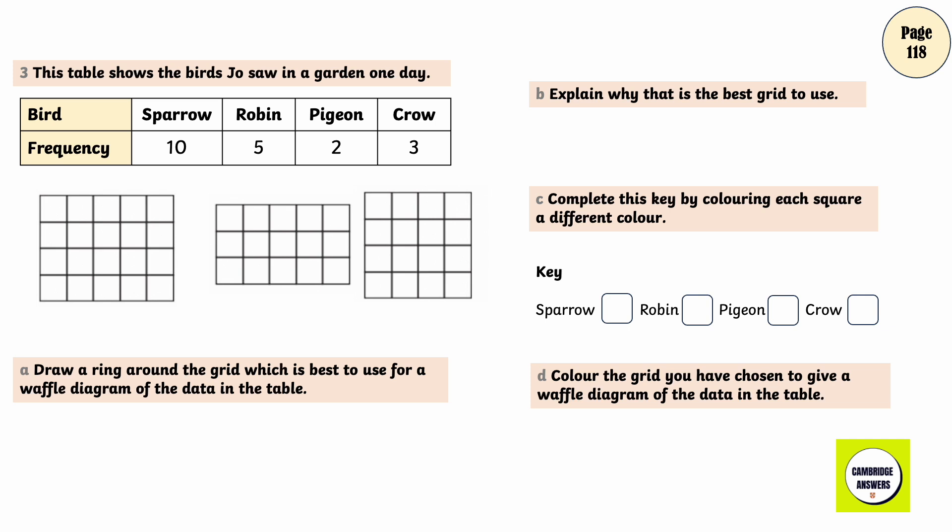This is the grid which is best to use for a waffle diagram of the data in the table. Explain why that is the best grid to use. The grid has 20 squares and there are 20 pieces of data.